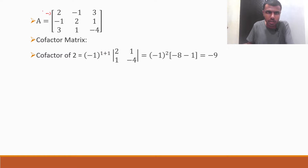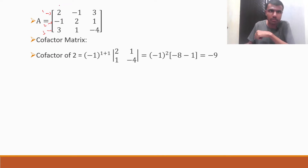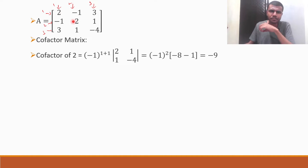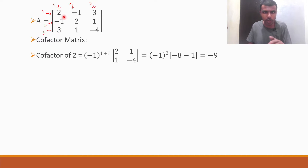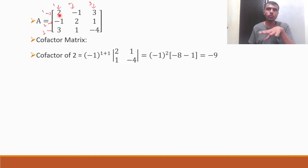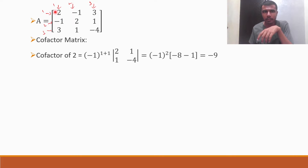This is row 1, this is row 2, this is row 3. Horizontals are rows and verticals are columns: column 1, column 2, and column 3. Now 2's position is first row, first column — so 1,1. That's why minus 1 to the power 1 plus 1. Strike off the row and column in which 2 is there.